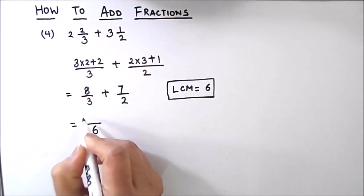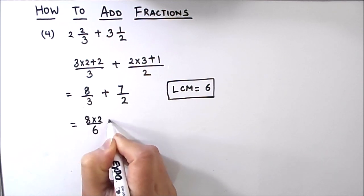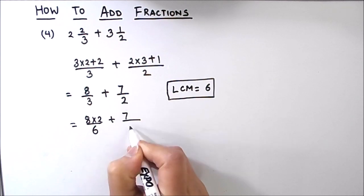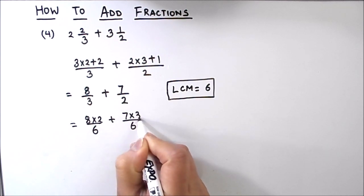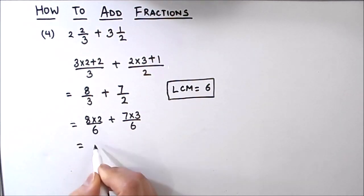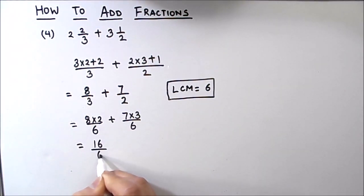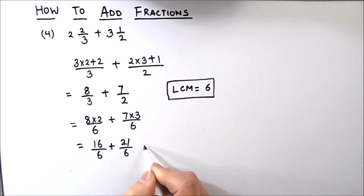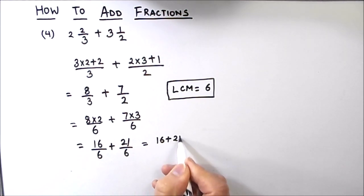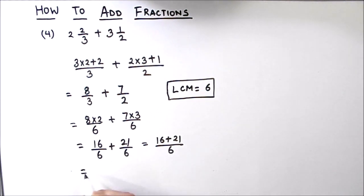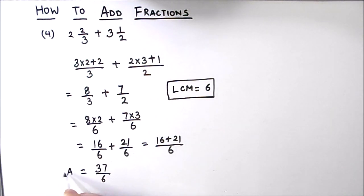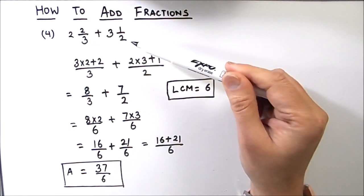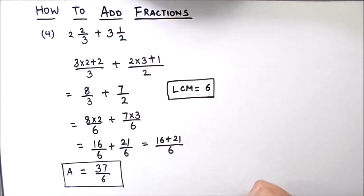We make both denominators equal to 6. For 8 by 3, multiply numerator by 2 to get 16 by 6. For 7 by 2, multiply numerator by 3 to get 21 by 6. Adding: 16 plus 21 divided by 6 equals 37 by 6. So our final answer is 37 by 6. The addition of mixed fractions is the same as for regular fractions, except we first convert the mixed fractions into improper fractions.